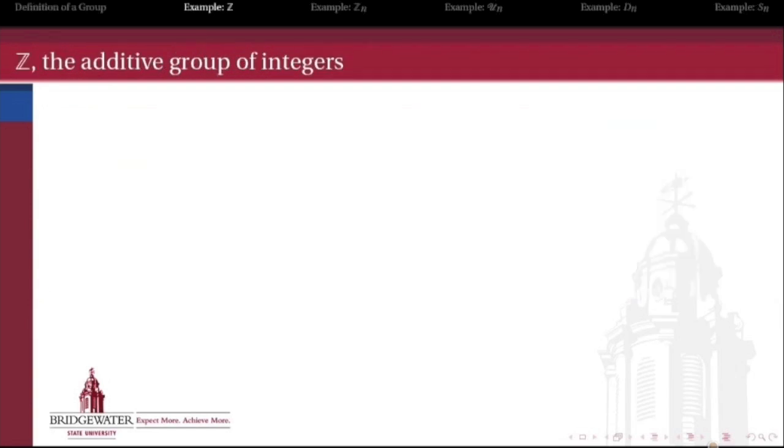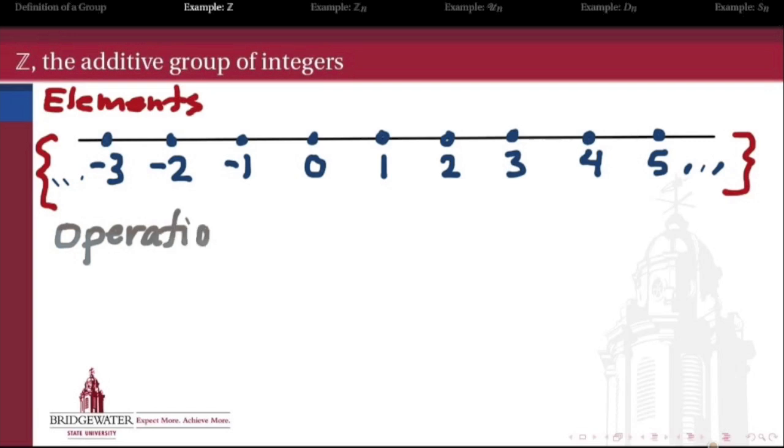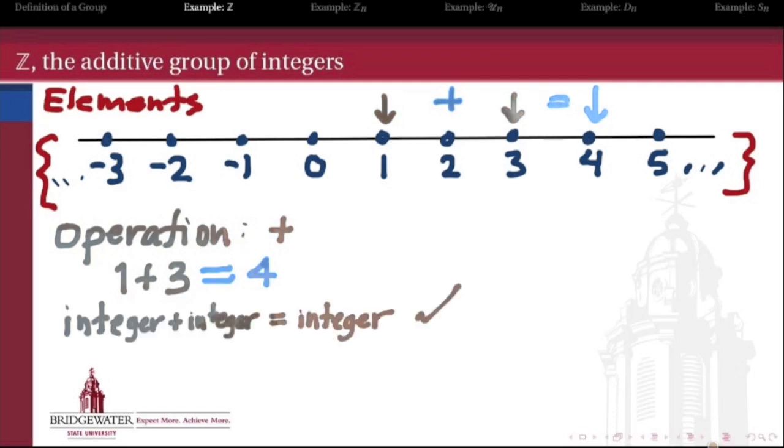First and foremost is the additive group of integers. The integers are the positive and negative whole numbers plus 0. The integers are the elements of that additive group, and the operation is addition. For instance, if I operate on 1 and 3, then 1 plus 3 is 4, and that 4 is still an element of the group. We get closure because any time I add one integer to another, the result is another integer. Associativity holds because addition of integers is associative.